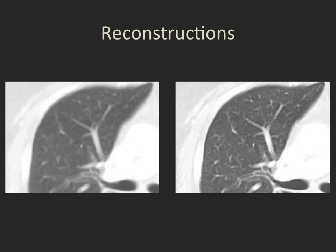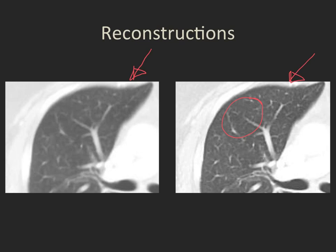On the left, it has been reconstructed with a conventional soft tissue algorithm. You can see that while you can see the lung parenchyma fairly well, it's a little blurry. Both of these are being displayed in the lung windows. On the right, the data has been reconstructed using a typical lung algorithm — a very crisp and contrasty algorithm — giving very nice resolution of these small vessels within the lung parenchyma.